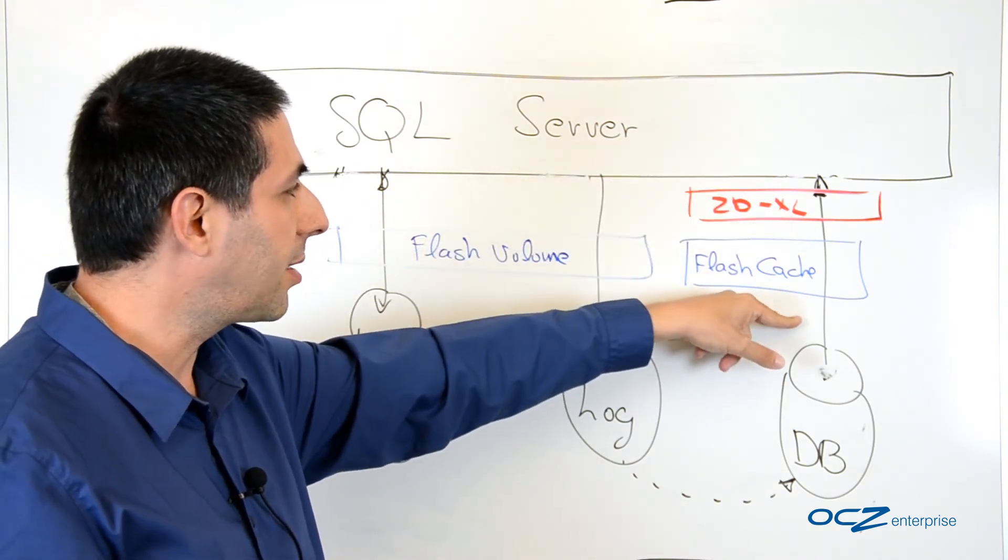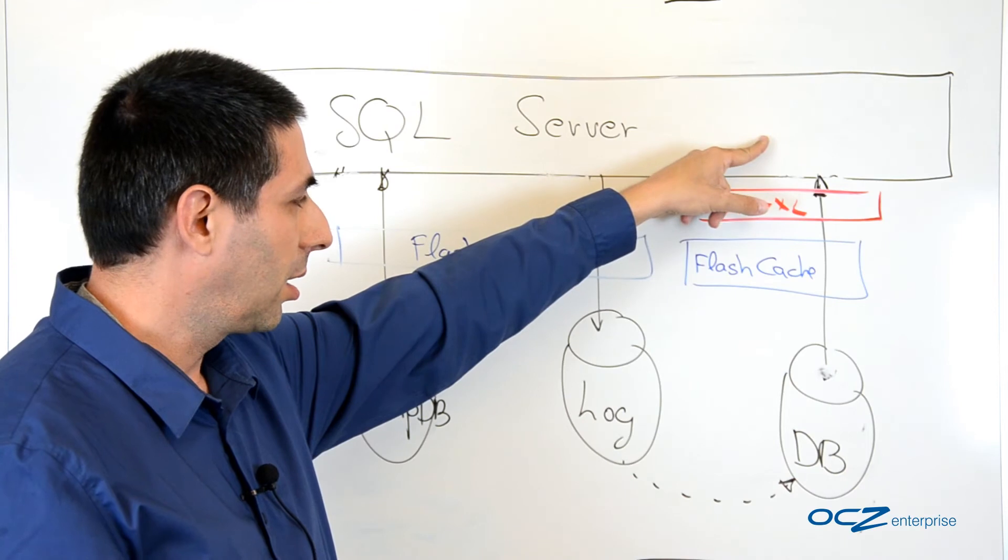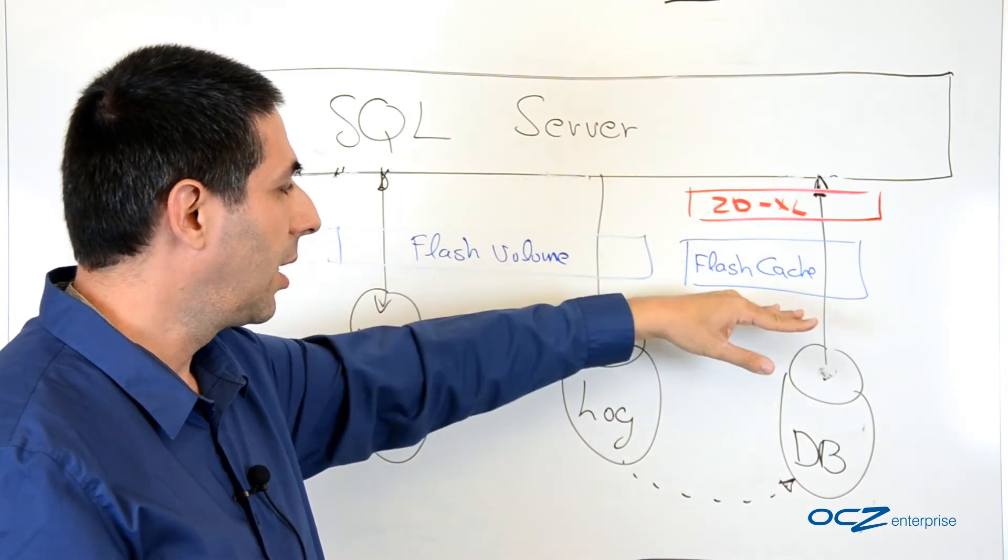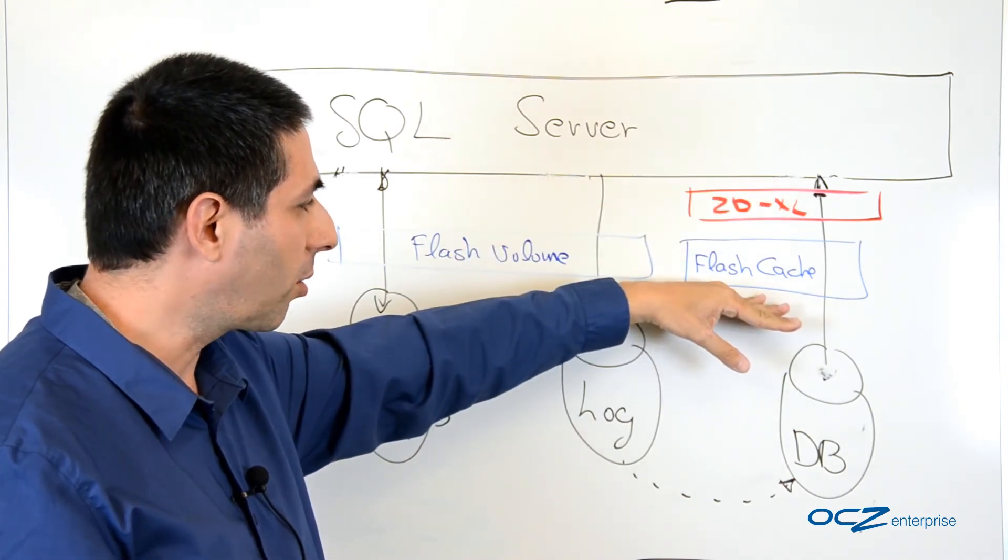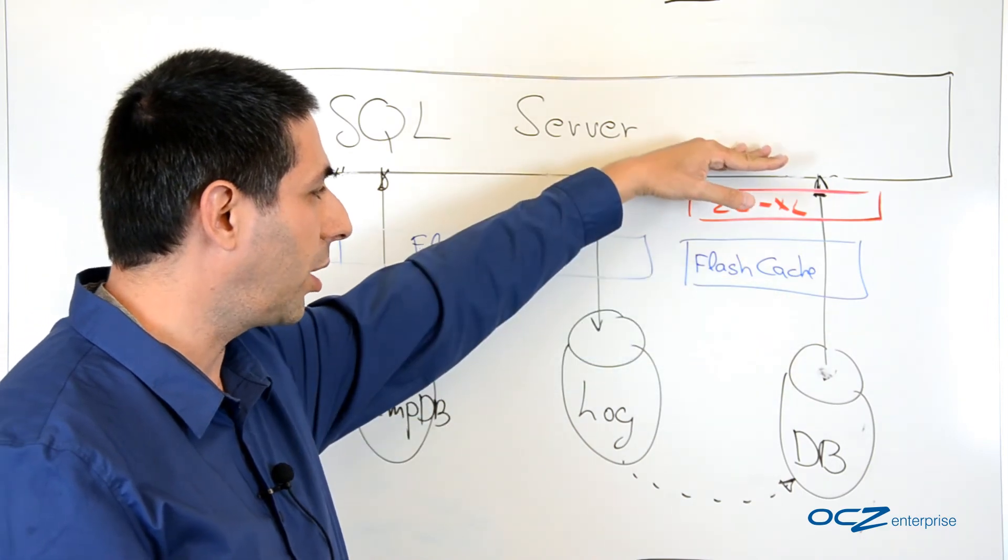As we mentioned, since the database is mainly a read towards the SQL server, we have fully a write-through caching that accelerates all this read incoming.